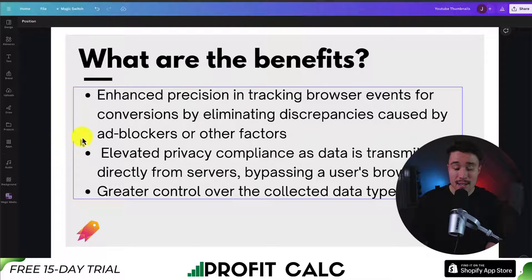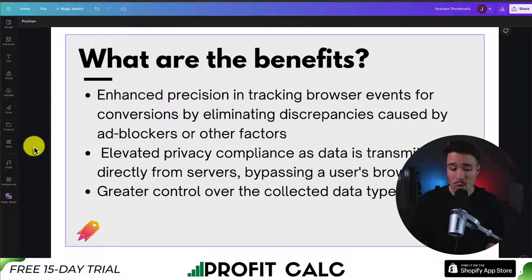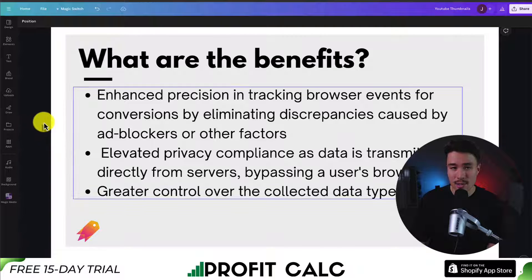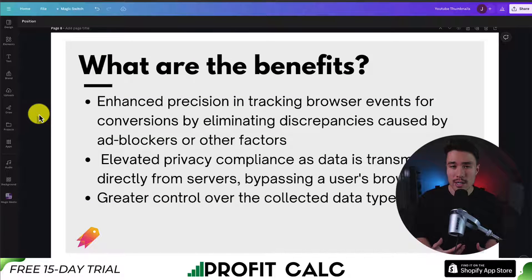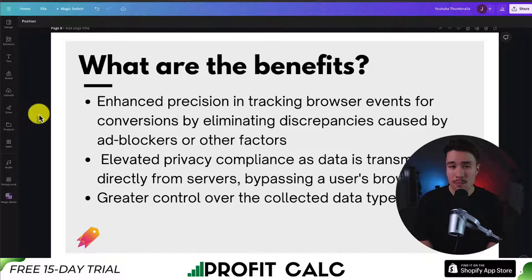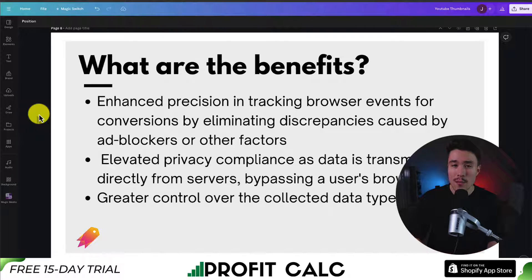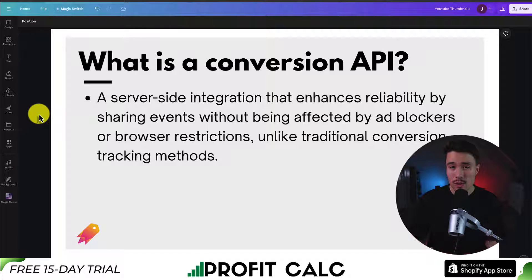The benefits of the conversion API include enhanced precision as well as greater control over the collected data types. When the iOS 14 update came out, many advertisers saw a huge decrease in performance from Facebook and Meta ads. Over the past year, a lot of this has been remedied with Facebook's conversion API, as it uses server-side events to increase the accuracy and tracking of all the data.